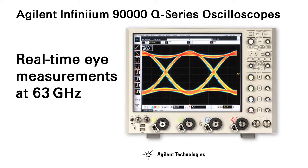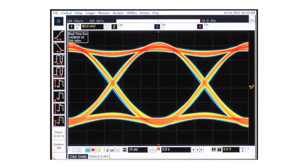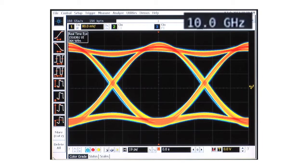Now, let's look at what 63 GHz of bandwidth means for a real-time eye. The signal we'll be looking at has a 12 picosecond rise time and is a 10.3125 gigabit per second signal. Here, we display the signal with the Q-Series bandwidth limited to 10 GHz. Notice that the signal appears like a sine wave.